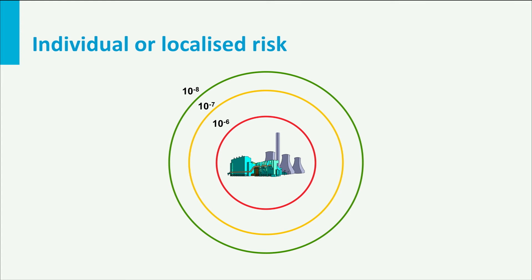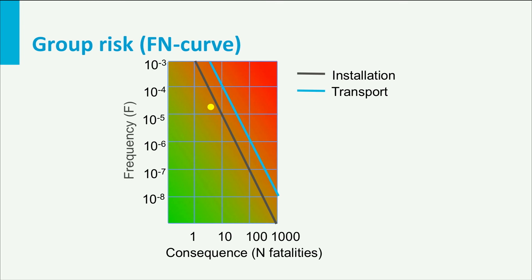Group risk is usually represented by a graph — an FN curve — in which the frequency in years and the amount of fatalities is pictured. In this graph we see a particular activity, for instance a chemical installation, and the frequency with which it will cause a certain number of casualties. For this particular installation, the frequency is about once every 80,000 years and we can expect 6 or 7 casualties. The graph also shows two lines representing an agreement between parties on how many casualties and how often these are permitted. We can see that this installation is below this so-called norm.